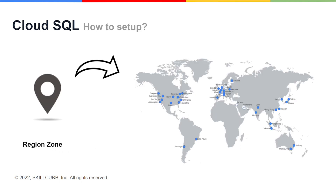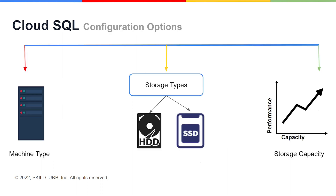Cloud SQL is easy to set up. You select the region and zone where you would like the instance to be, and it gets created there. You also have a lot of configuration options, where you can select the machine type with the right number of CPUs and amount of memory you need. Then you choose storage — either solid state or hard disk drive — depending on latency, queries per second, and cost requirements. You set storage capacity, and the higher the storage capacity, the better your performance.